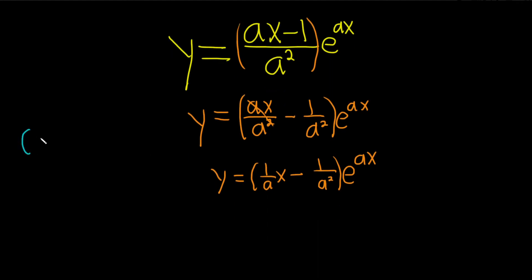Product rule says if you have two functions, say f, and then you multiply it by g, and you take the derivative. Think of f as your first function and g as your second function. It's the derivative of the first times the second plus the first times the derivative of the second. So here this is our first function and this is our second function.